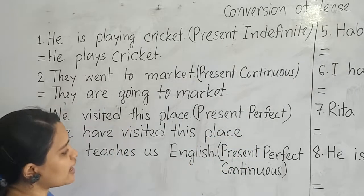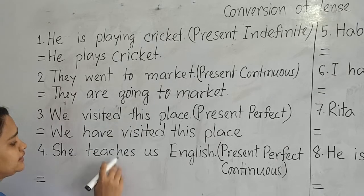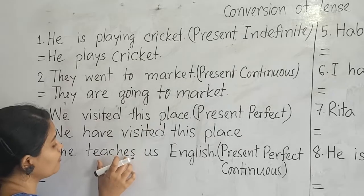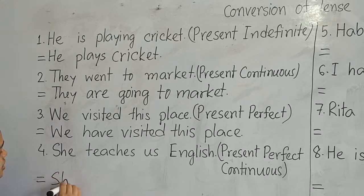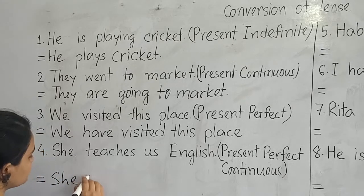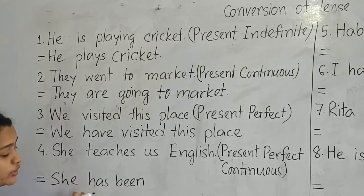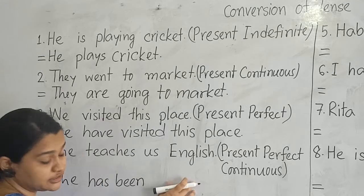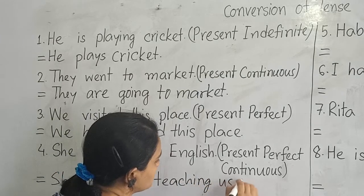Number four: 'She teaches us English.' We will change it to present perfect continuous tense. The verb 'teaches' uses '-es', so it is in present indefinite tense. Our subject is 'she', and after 'she' we write 'has been' because the subject is third person singular number — we use 'has' after third person singular. Then the verb with '-ing': t-e-a-c-h-i-n-g, teaching. So: 'She has been teaching us English.'